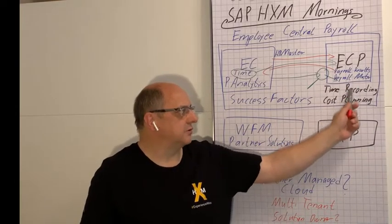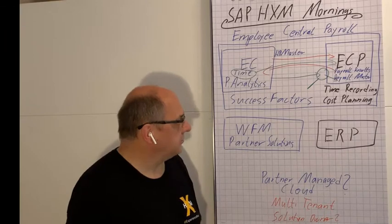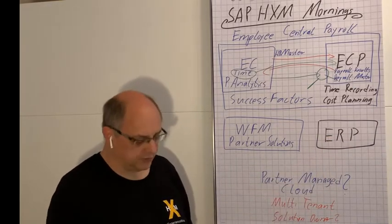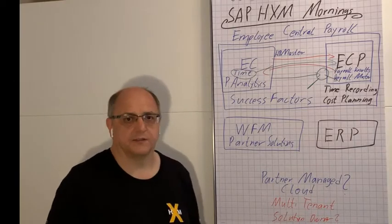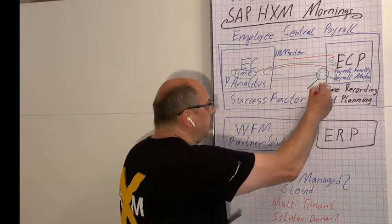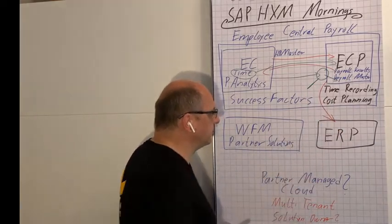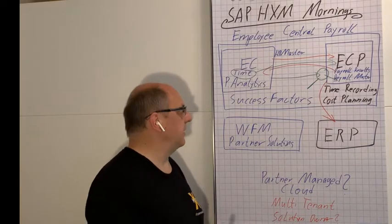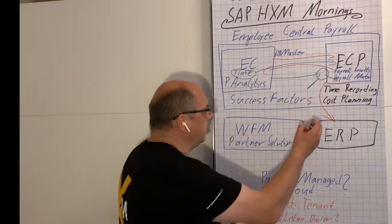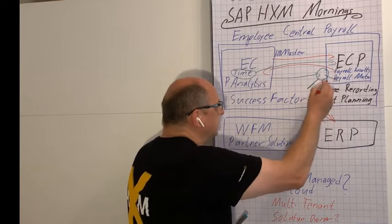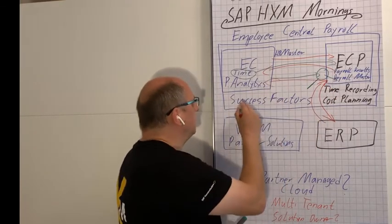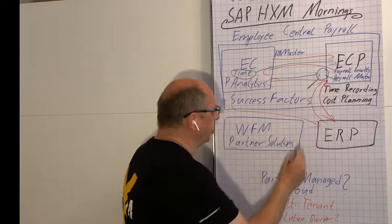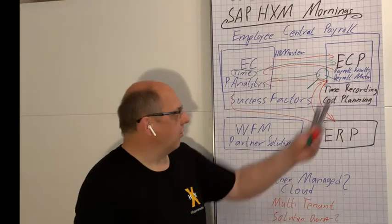Your ERP solution with your finance module needs to integrate with payroll, and that works very well. Your ECP can just as well post payroll results into your financial ledgers as you are used to from the on-premise solution. Your ERP can also mirror cost centers to where they are needed, and if necessary, you can also have employee master data flowing directly from Employee Central or through the ECP.